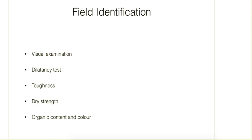Apart from the laboratory tests, some field identification tests are also there to classify the soils or to make a quick judgement. Visual examination is where you take some soil and check its contents. If it is showing mostly bigger particles then it is a coarse grained soil, and if the finer particles are more then it is a fine grained soil. If it is a fine grained soil then we can perform some other tests on it.